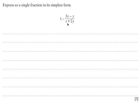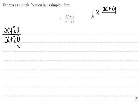Well, if I want to simplify this to one fraction, I need to put this integer as a fraction. The way to do this is I need to rewrite 1 as x plus 2y over x plus 2y. Essentially, it's 1 times x plus 2y over x plus 2y.